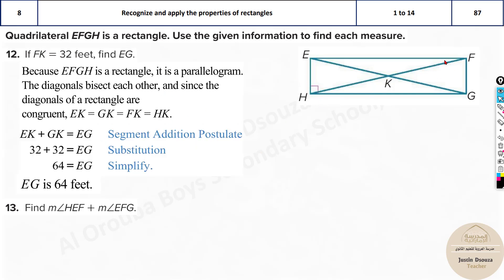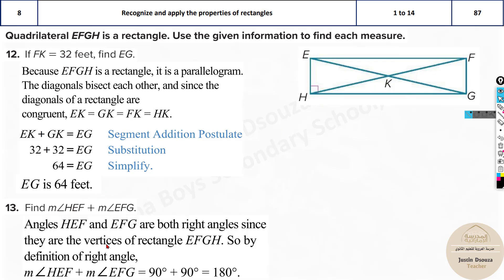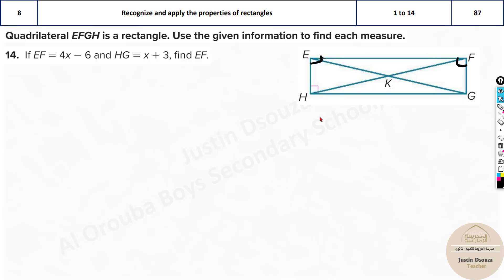For the diagonal length: FK is given as half the diagonal, so the full diagonal EG = 32 × 2 = 64. For angles HEF and EFG: since all corners are 90°, HEF + EFG both equal 90°, and together they sum to 180 degrees.